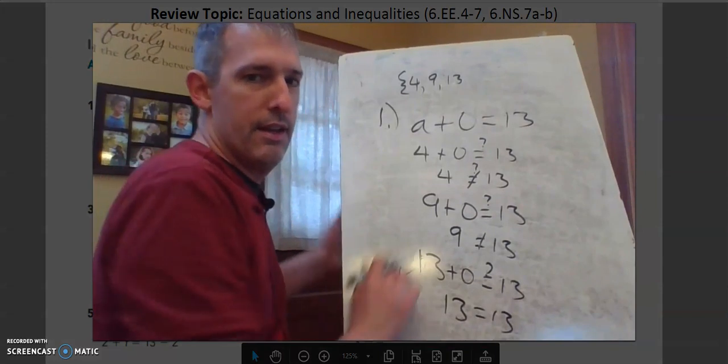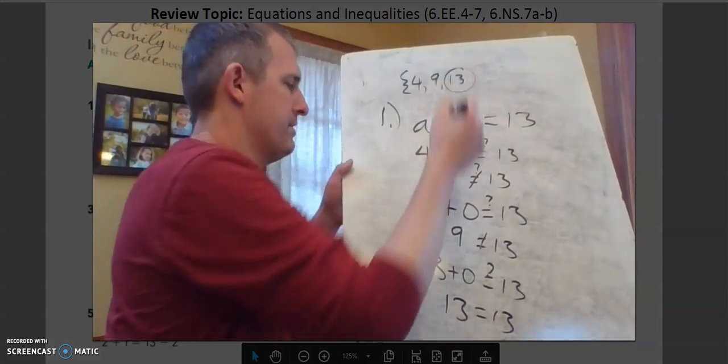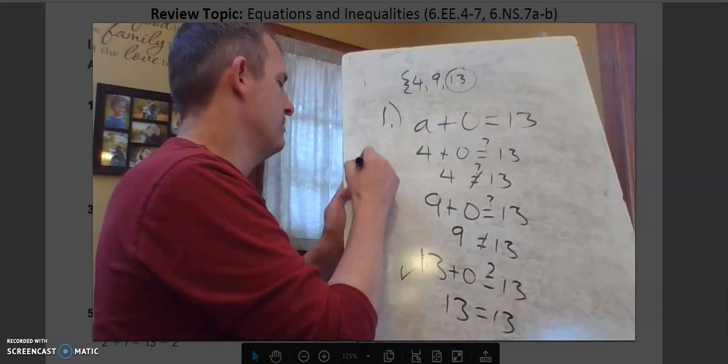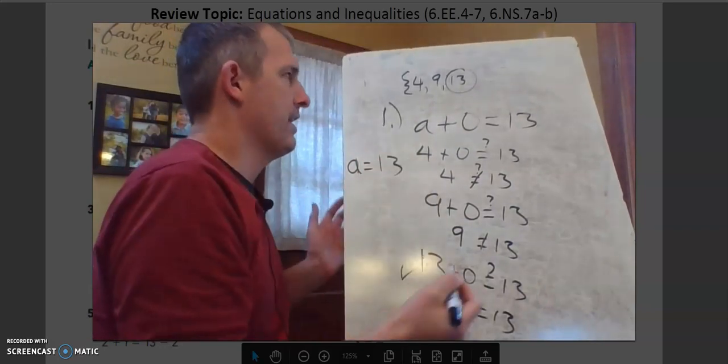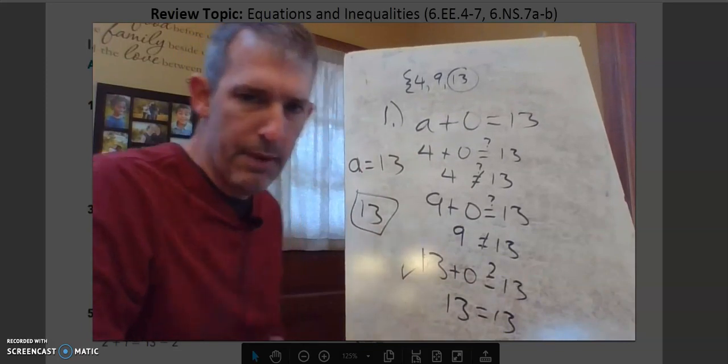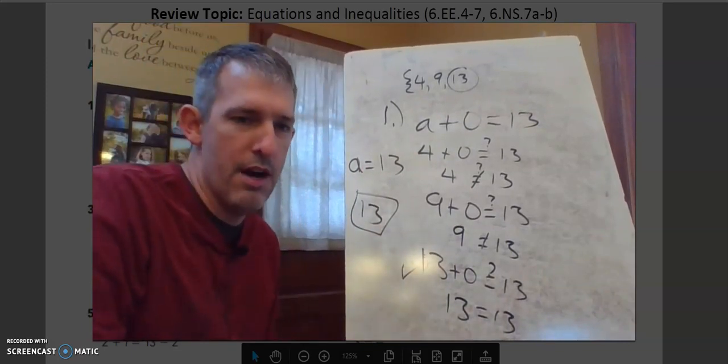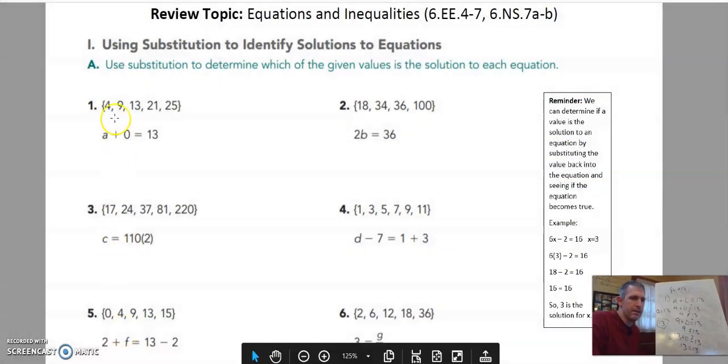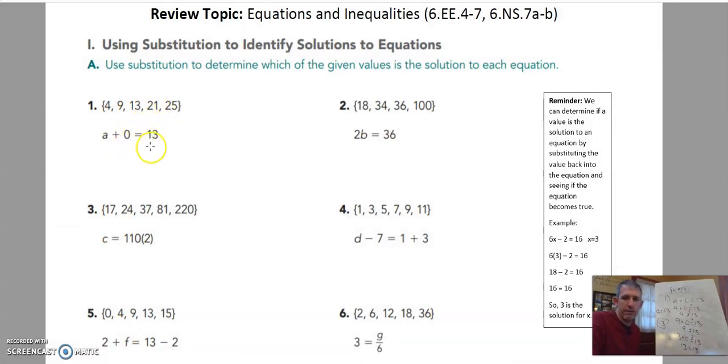So I would either circle 13, or I would say A equals 13, or I could just say 13 is a solution. Now, we could continue on and try these other ones, but think about it. 21 plus 0 is not going to equal 13, and 25 plus 0 is not going to equal 13. So that's basically the idea here: you take which of these numbers, put it in for the variable, is going to make that a true statement.